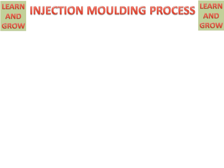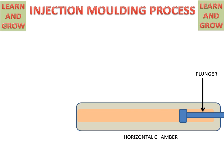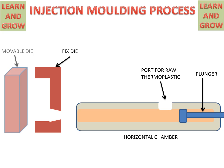First, we will discuss the parts of the injection molding process. We have a horizontal chamber with a passage and a plunger which forces the molten metal through the passage. There is a port for raw thermoplastic, as well as a fixed die and a movable die.